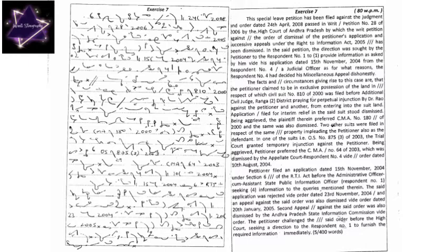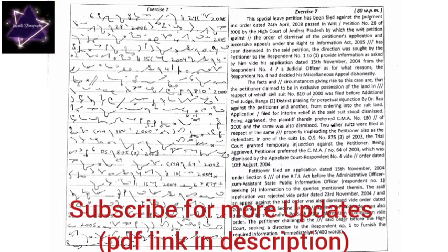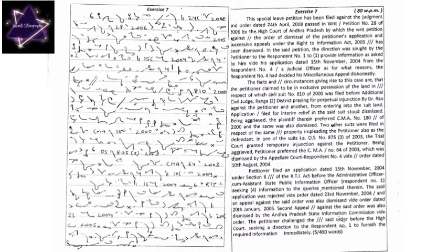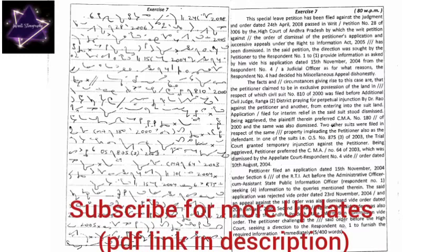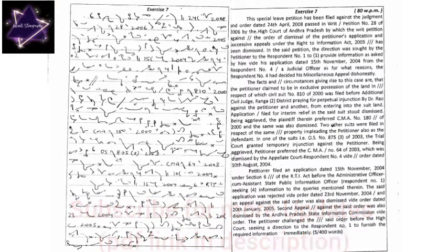Second appeal against the said order was also dismissed by the Andhra Pradesh State Information Commission vide order. The petitioner challenged the said order before the High Court, seeking a direction to respondent number 1 to furnish the required information immediately.